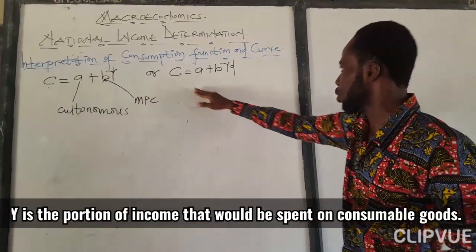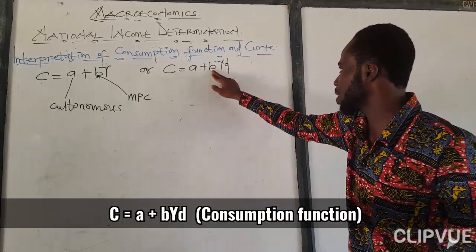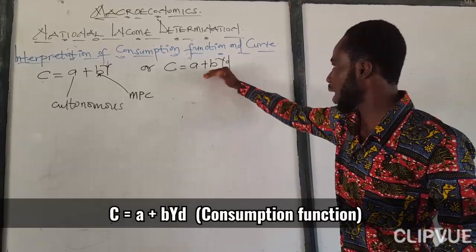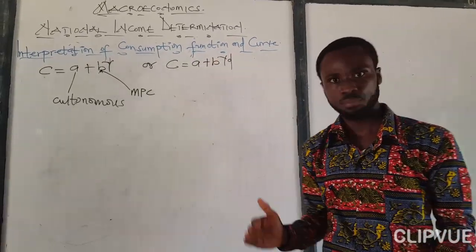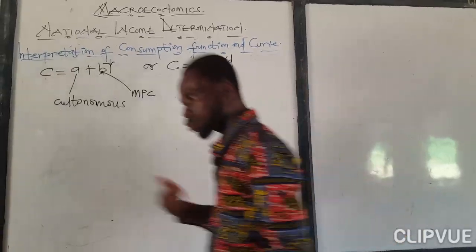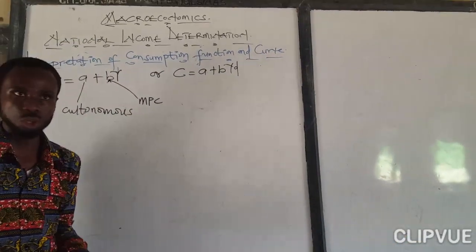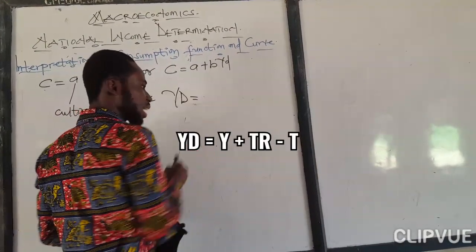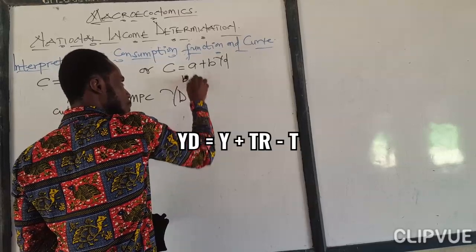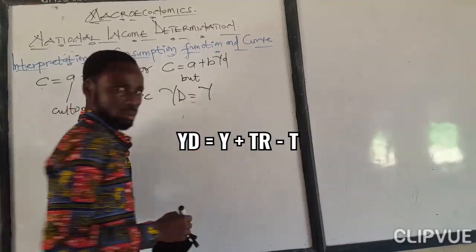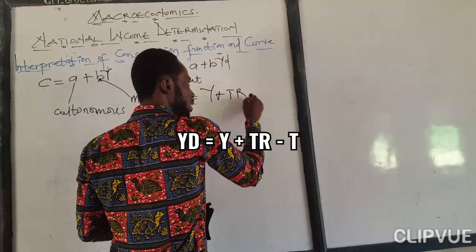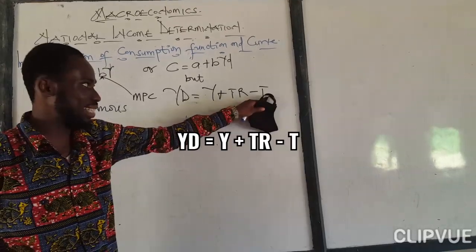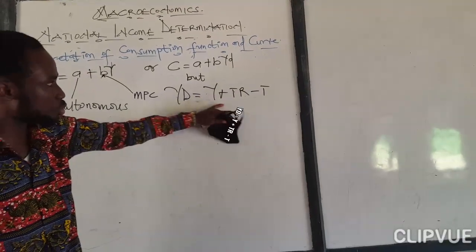You can also write the consumption function as C equal to A plus B times disposable income (Yd). But if you are writing it like this, there are a lot of things you must consider, because disposable income alone comes with other factors. Disposable income is equal to income plus transfer payment minus direct tax.